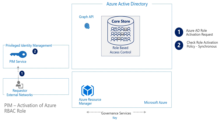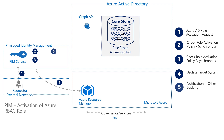In step three, instead of going up to Azure AD as we saw in the last video, the change then goes down to the Azure Resource Manager. In step four, the Azure Resource Manager is the target system that is updated for all Azure resource roles. In step five, a notification is then sent out to the appropriate people and logs are populated to record this event.